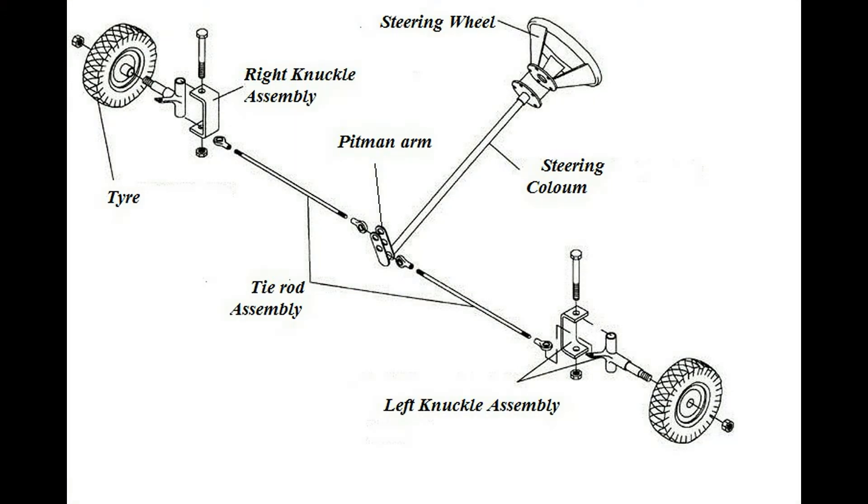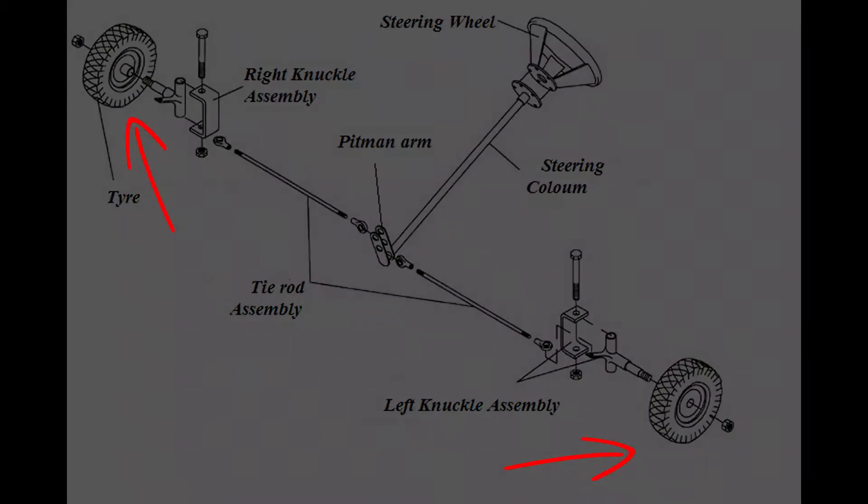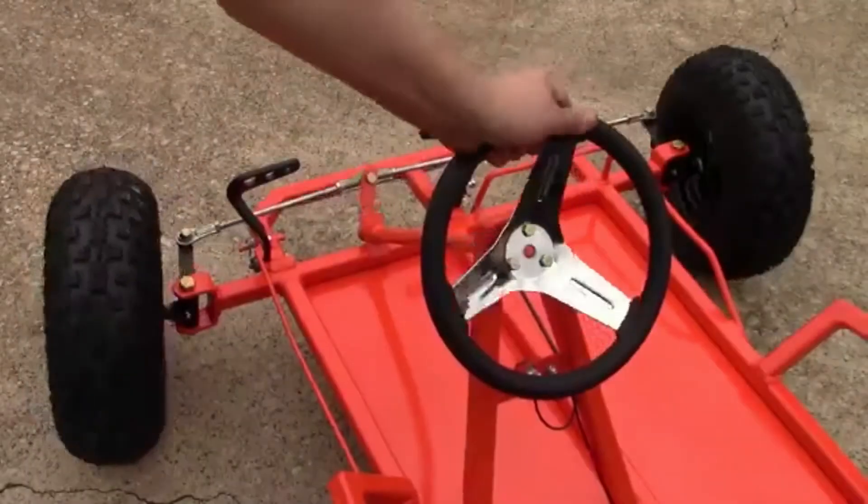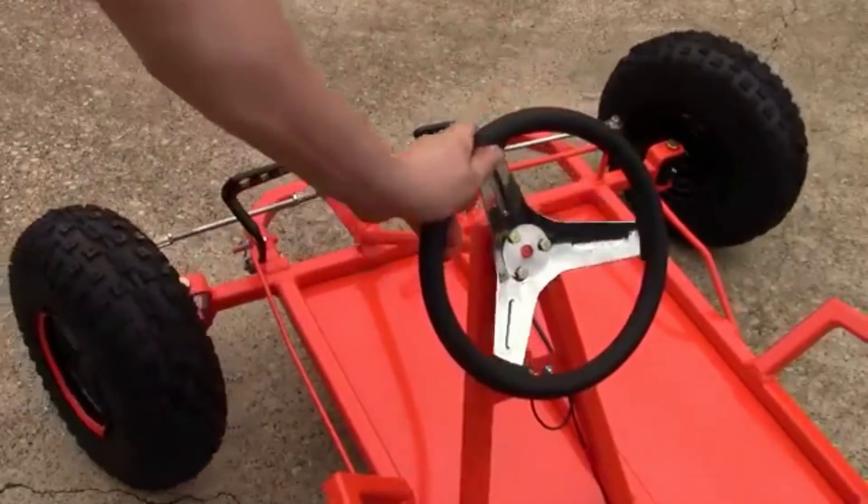How does the steering system work? Steering system converts rotatory motion of the steering wheel into angular motion of wheels.